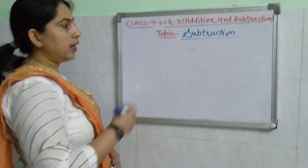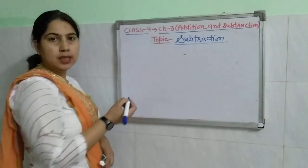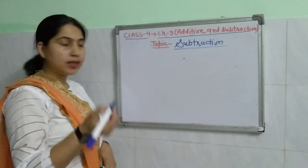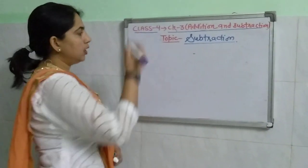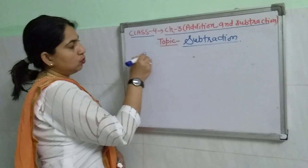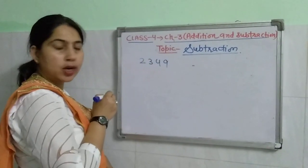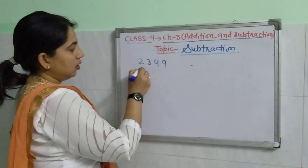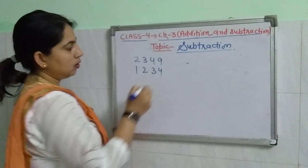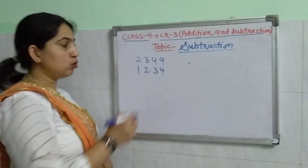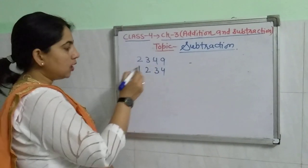Take an example: two numbers are given and we have to subtract the second number from the first number. Take 2, 3, 4, 9 and 1, 2, 3, 4 — we have to subtract this number from this.